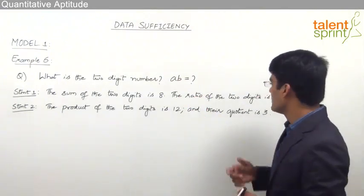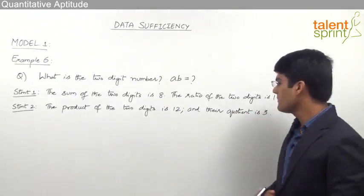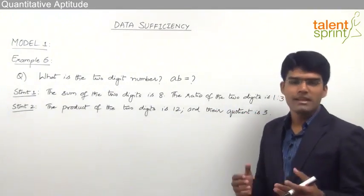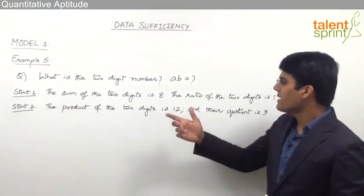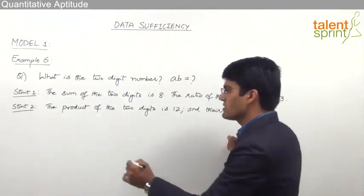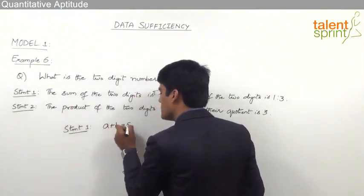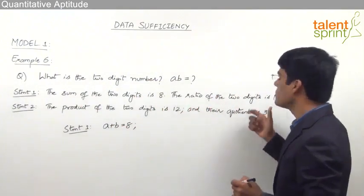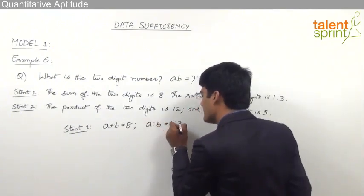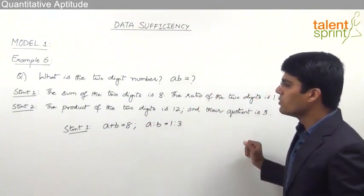So if we are able to find out what A and B are, we will be able to answer this question. Statement 1 says the sum of the two digits is 8, and the ratio of the two digits is 1 is to 3. That means A plus B equals 8, and A to B equals 1 to 3, or A by B equals 1 by 3.